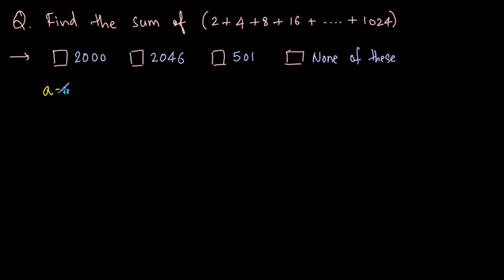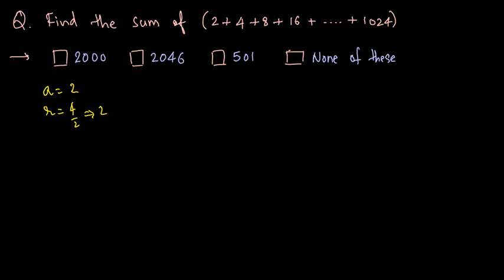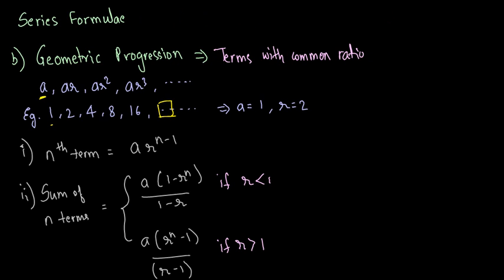Here, a is equal to 2 and the ratio r is equal to — taking the ratio of any two successive numbers, 4 divided by 2 — that is equal to 2. So the ratio is also 2. We have been asked the sum of the series. Our ratio is greater than 1, so we will use the formula: a into (r raised to n minus 1) divided by (r minus 1).